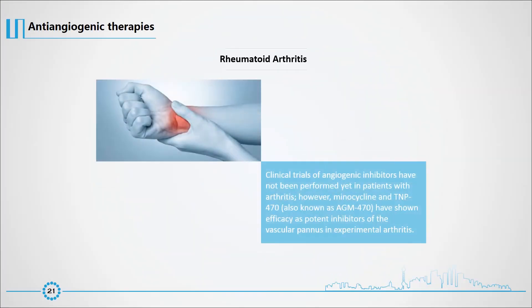Clinical trials of angiogenic inhibitors have not been performed yet in patients with arthritis; however, minocycline and TNP-470, also known as AGM-470, have shown efficacy as potent inhibitors of vascular pannus in experimental arthritis.